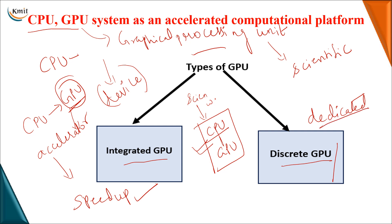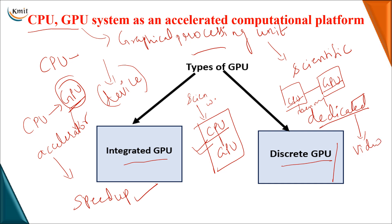We also have a dedicated GPU where you have a separate GPU that you attach as another device. This is a dedicated GPU and each of the CPU and GPU will have their own memory for storing data. This type is basically used for video processing or image processing applications, for feature extraction applications, and similar tasks.